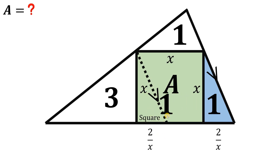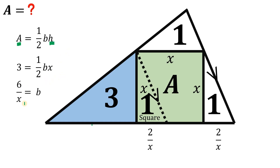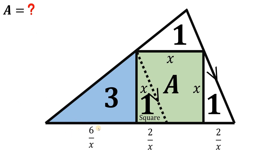Now let's focus on the right triangle with an area of three square units. Again, we rewrite the base in terms of x. Using the formula: area equals one-half times base times height. The area is three and the height is x. Solving for b in terms of x, b is equivalent to 6 over x — that is the base of this right triangle.